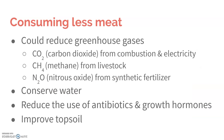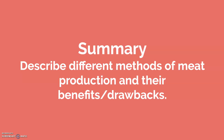Ways to improve the meat industry include simply having one day a week where you don't eat meat. It doesn't have to be fully vegetarian — just one day can have a significant impact. It can reduce greenhouse gases like carbon dioxide from combustion and electricity, methane from livestock, and nitrous oxide from synthetic fertilizers. It also conserves water, reduces the use of antibiotics and growth hormones due to lower demand, and improves topsoil.